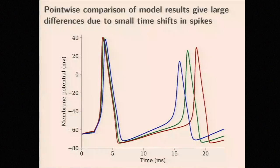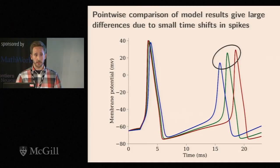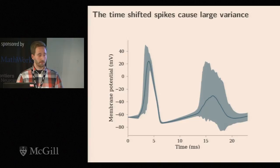Since things never are as straightforward as we would hope, one problem that occurs when performing uncertainty quantification in neuroscience is a huge variance due to small shifts in spike timing. Here you see a neuron model with three evaluations using slightly different parameters. When finding the variance we compare membrane potential at each point in time, and the difference is really large — what is for all biological intents and purposes the same spike occurs at different times. Performing an uncertainty quantification on this model gives a very large 90% prediction interval, making it hard to draw conclusions about the second spike.